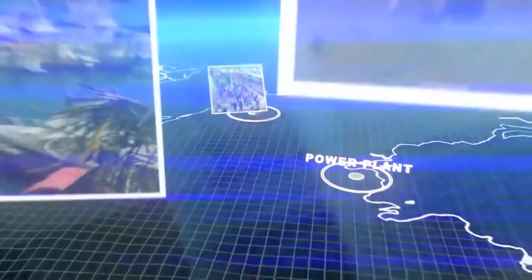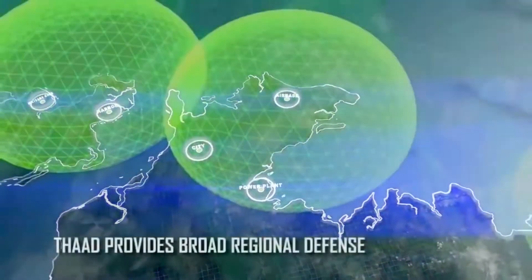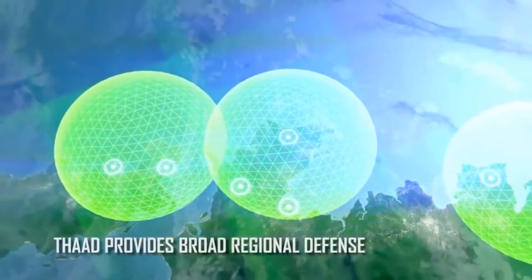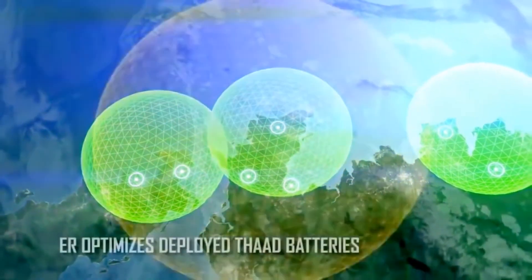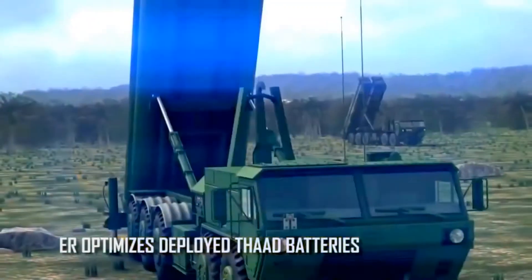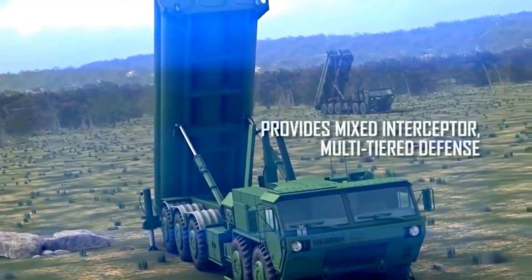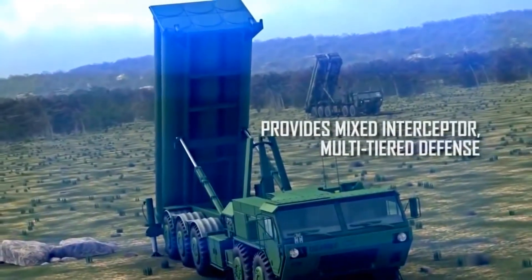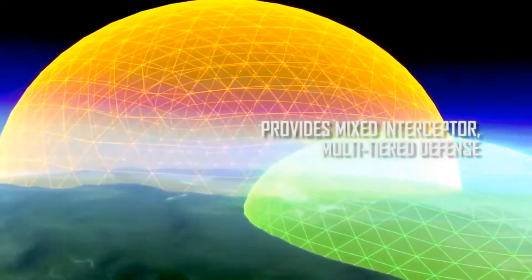To protect population centers, key infrastructure, and deployed forces, defenders strategically position missile defense assets across a region. With THAAD ER interceptors emplaced as a second option, THAAD ER can significantly lower the cost of missile defense by reducing the number of batteries needed to protect large regions.